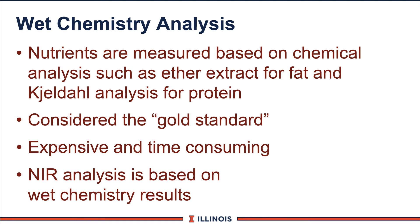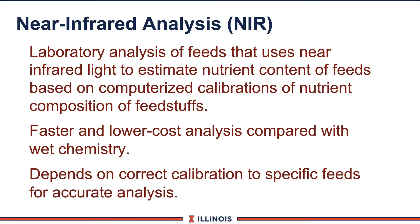Wet chemistry means that nutrients are based on some type of chemical analysis — for example, ether extract for fat, or Kjeldahl for proteins. It's considered the gold standard, but it's very expensive and takes time. NIR, near-infrared analysis, means we shoot a light beam across a feed sample that has been ground and processed, and that's been associated with a chemical analysis. It's a very quick and inexpensive analysis that can be done in less than one day. The key is you need a very accurate calibration set, because it has to have seen this forage type before and just repeats the light array.